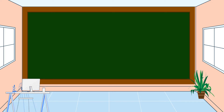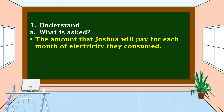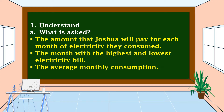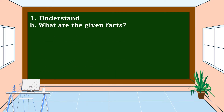We're going to use the four-step plan. First, we're going to understand the problem. We should know what is asked: the amount Joshua will pay for each month of electricity consumed, the month with the highest and lowest electricity bill, and the average monthly consumption.